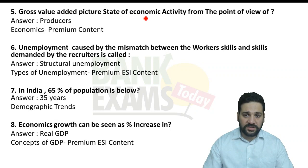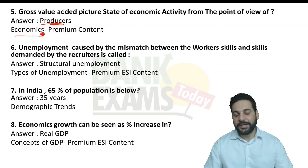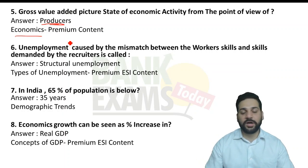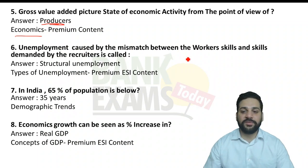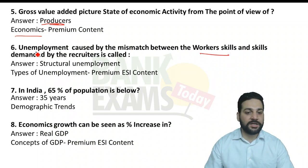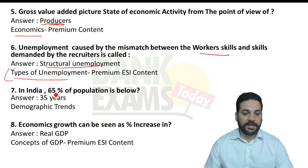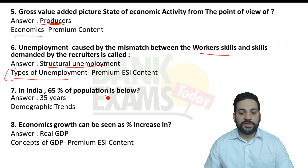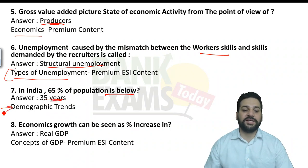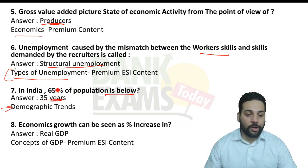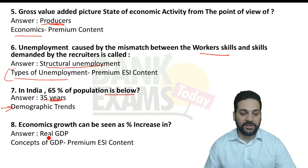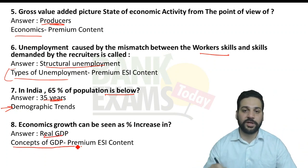Gross Value Added depicts the state of economic affairs from the point of view of producers — part of our static economics premium content. Unemployment caused by a mismatch between worker skills and skills demanded by recruiters is called structural unemployment — part of types of unemployment lectures in premium ESI content. In India, 65% of population is below 35 years — part of the demographic trends lecture. Economic growth as percentage increase in real GDP was covered in the concepts of GDP lecture, the first chapter.